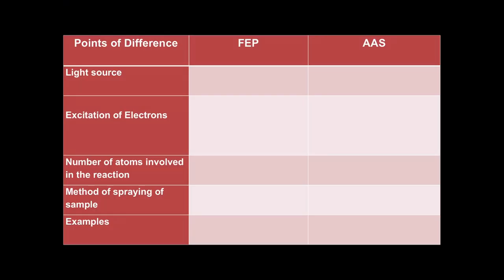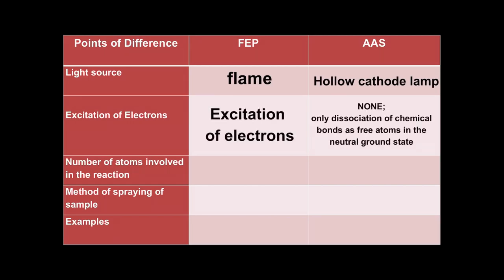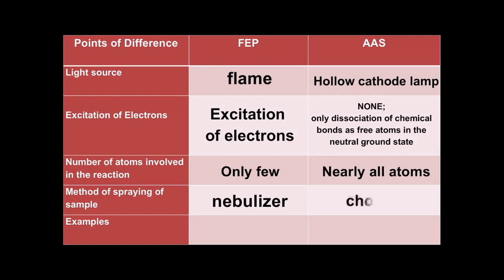To summarize the differences between FEP and AAS: FEP uses flame as its light source, while AAS uses a hollow cathode lamp. Excitation only happens in FEP; AAS involves only dissociation of atoms. FEP involves only a few atoms, whereas AAS involves nearly all atoms. The spraying method in FEP uses a nebulizer; in AAS, a chopper is used. FEP analyzes electrolytes such as sodium, potassium, and lithium; AAS analyzes trace elements such as calcium and magnesium. That ends the discussion — thank you!